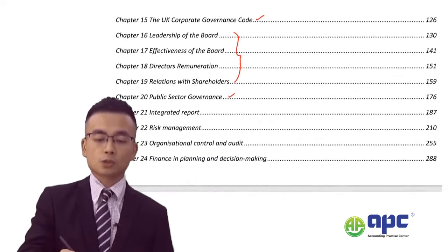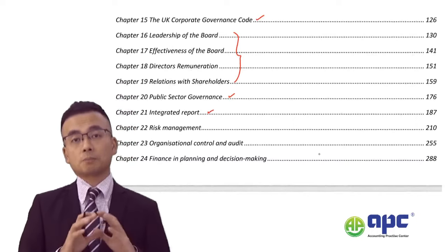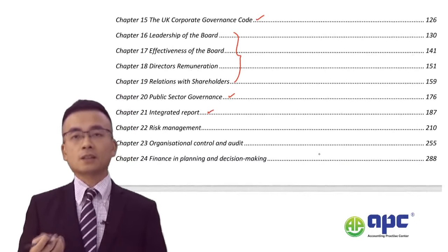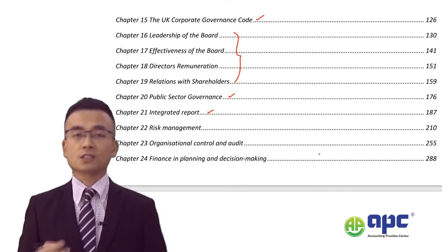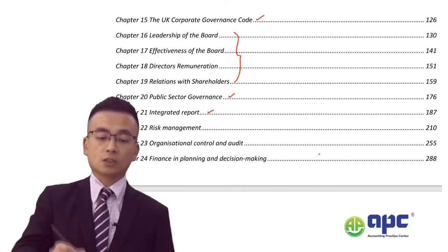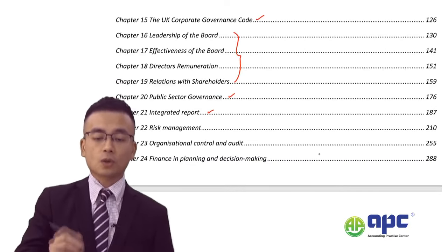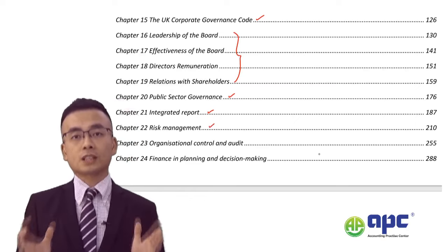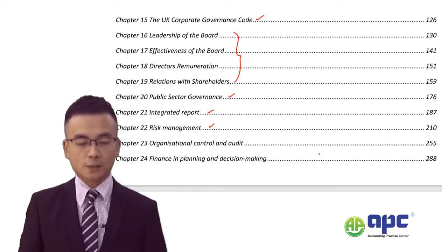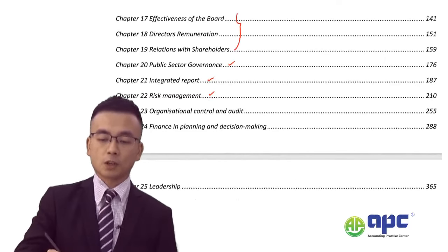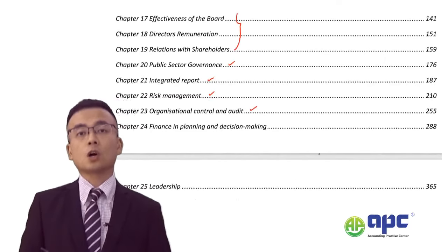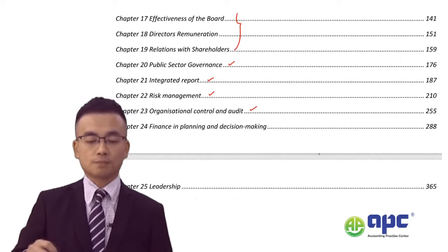Chapter 21 covers the integrated report — one of the disclosure requirements to make information transparent and understandable to investors and other stakeholders. Chapter 22, although named risk management, is part of the corporate governance section. We'll also be moving on to audit, which is also part of the corporate governance section.